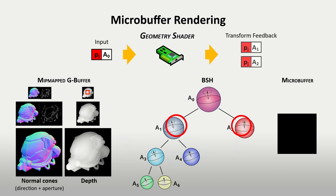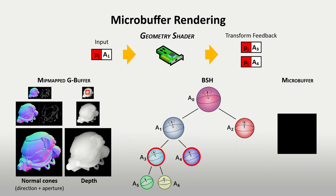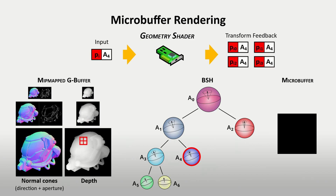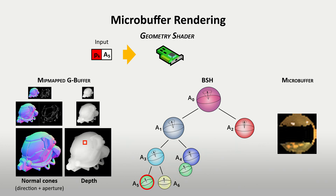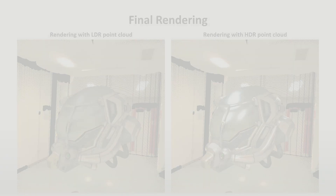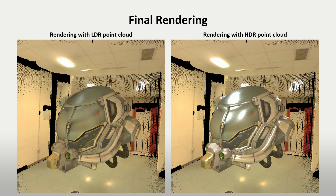The three paths are: to refine the visit in the BSH by going into the two children of the current node; to refine the G-buffer by going into the four children of the current pixel in the next level; or to rasterize the current node in the micro-buffer, if the node is a leaf or when its solid angle is lower than the solid angle of a pixel in the micro-buffer. Finally, the collected micro-buffers are combined with the BRDF data of the 3D model, increasing the realism of the final rendering.